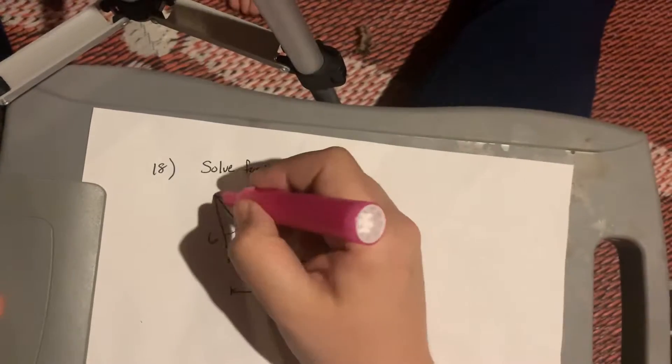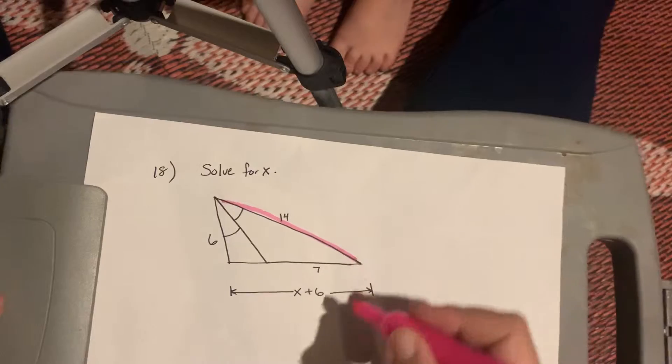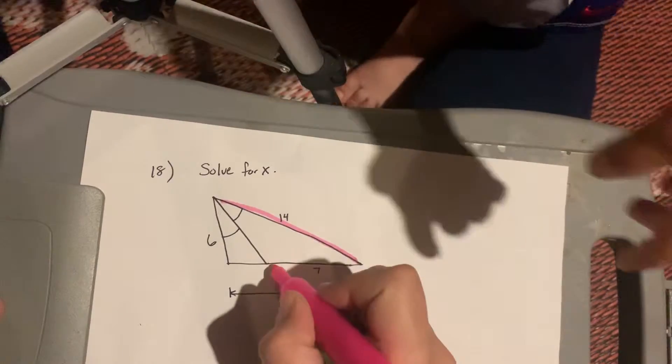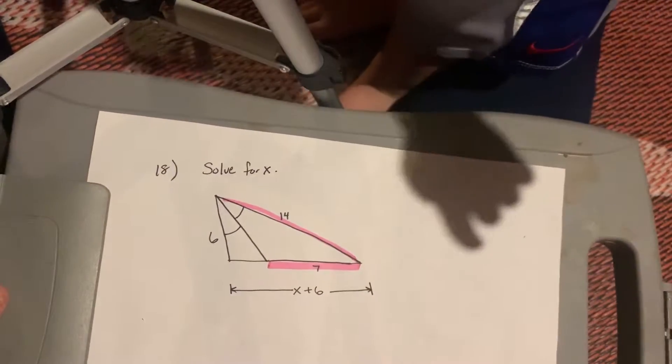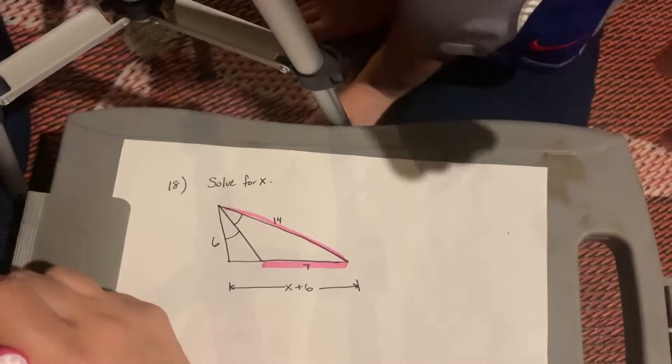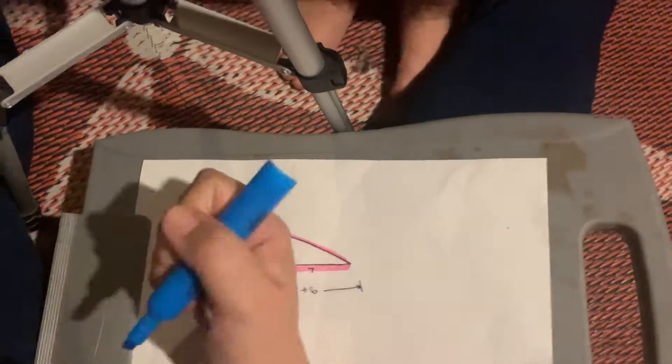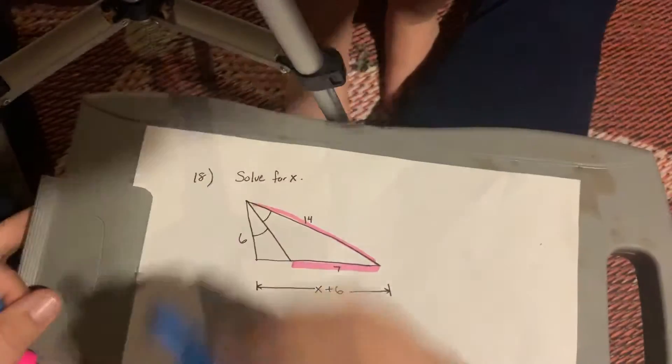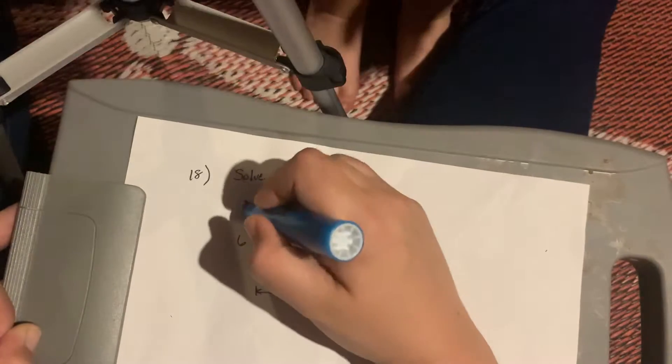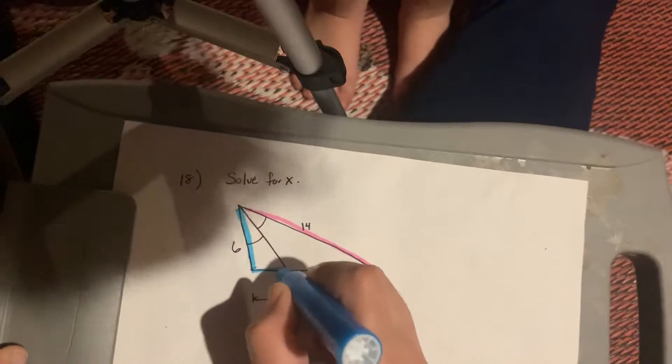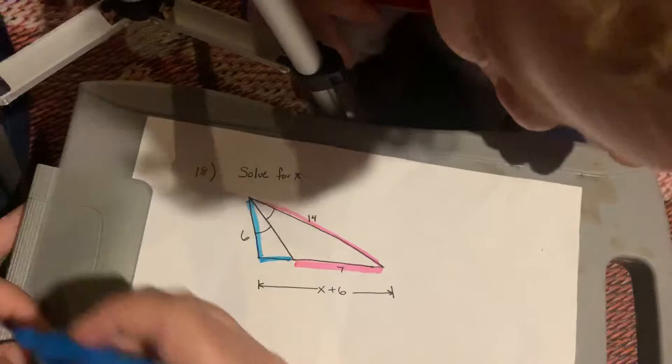This side, that's 14. If I make a proportion out of that, and this side, that's a 7. I'm going to make a fraction out of those two, and that's going to be in the same proportion as this side, that's 6, and this little side that we have nothing for.